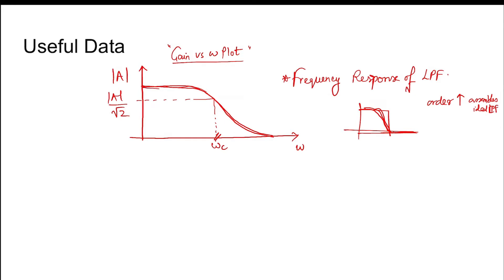Now we are considering a normal LPF whose response is like this. The value of the frequency for which the gain of the filter is 1/√2 times its maximum gain is known as the cutoff frequency.